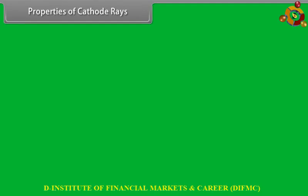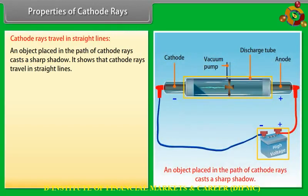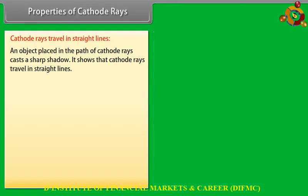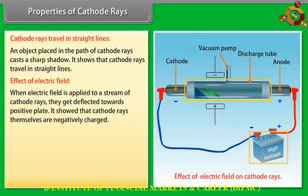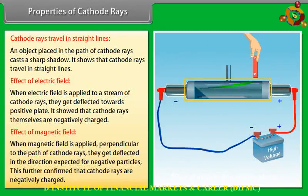Properties of cathode rays: Cathode rays travel in straight lines — an object placed in their path casts a sharp shadow. When an electric field is applied, cathode rays are deflected towards the positive plate, showing they are negatively charged. When a magnetic field is applied perpendicular to their path, they are deflected in the direction expected for negative particles, further confirming they are negatively charged.